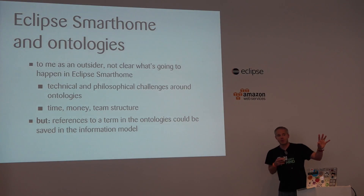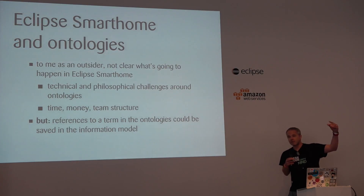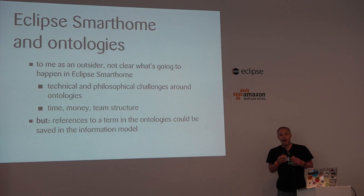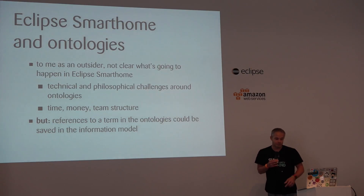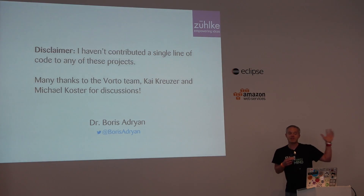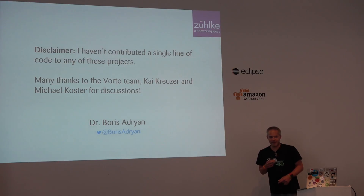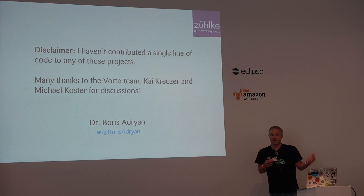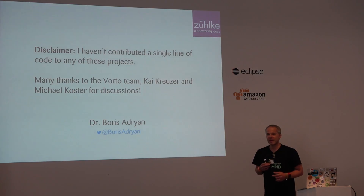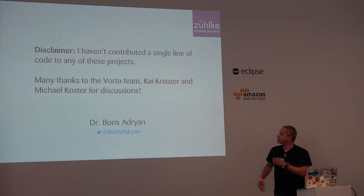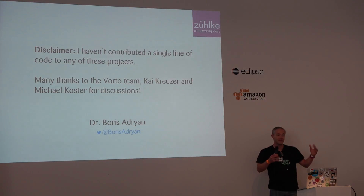What makes me hopeful is that with Vorto you can very easily just add an annotation field to your information model, and that annotation field would then reference an ontology. So effectively, whatever happens, the technical infrastructure is already there. I want to finish with a disclaimer: I have not contributed a single line of code to any of these projects, and I feel especially honored that I can talk about them nevertheless. It might be because info models and ontologies are very dry and you won't find many people who enthusiastically talk about them. I'd really like to thank the Vorto team for doing all the work, and Kai and Michael Koster for discussions around ontologies and how we can get ontologies into the home ecosystem. Thank you.